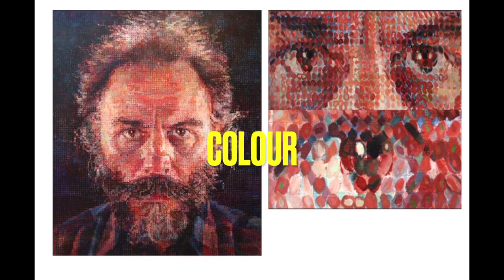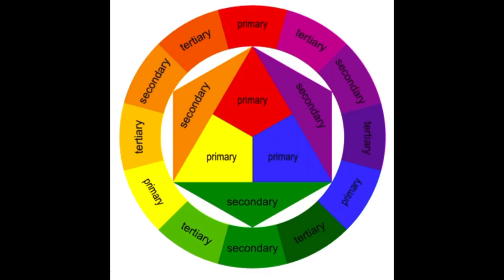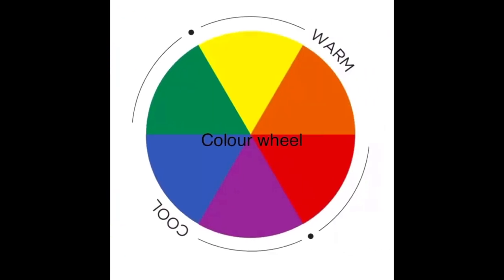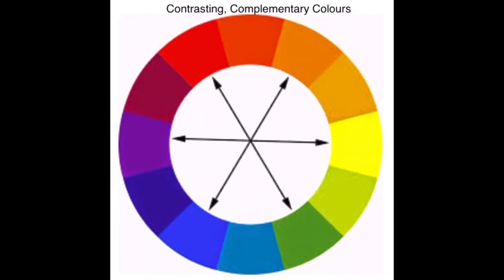The next prompt is colour. Look at a colour wheel. What kind of colours has the artist used? Has the artist used hot and cold colours? Has the artist used contrasting, complementary, or harmonious colours? Does the colour affect the mood and atmosphere? Or how does the colour create a visual impact?